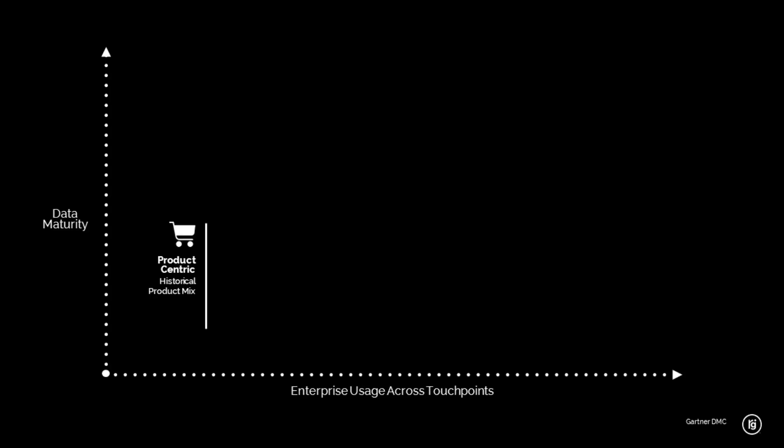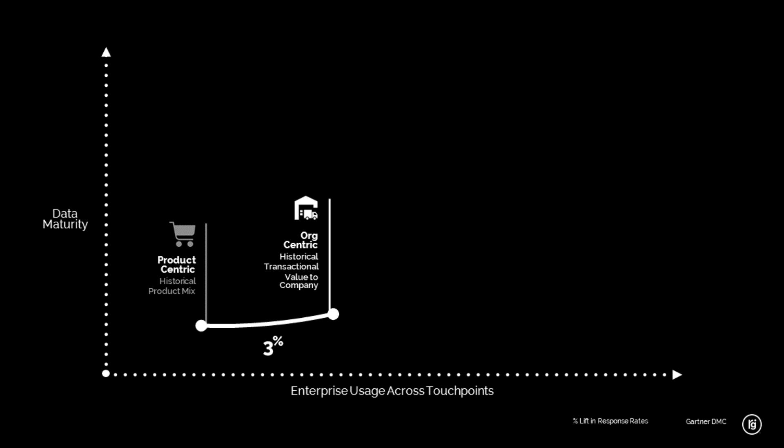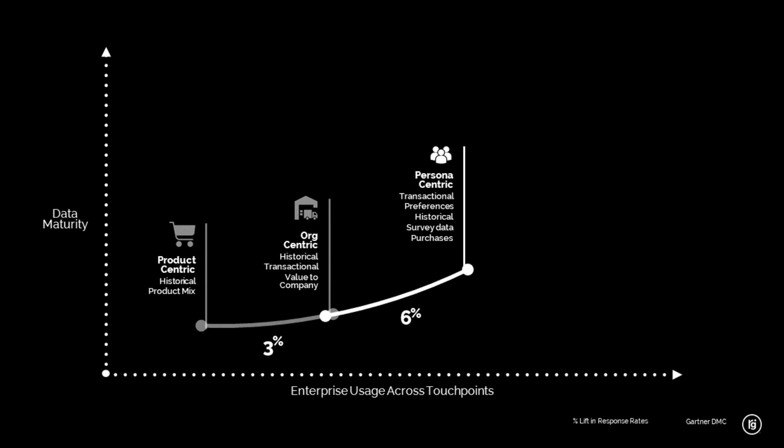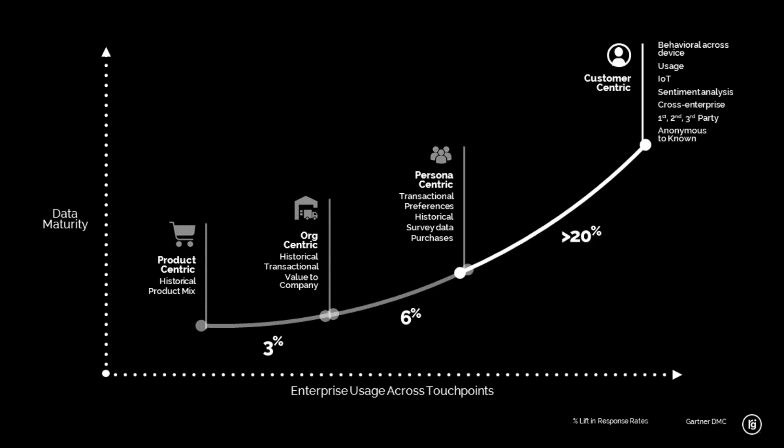The dividends are worth it. This is a chart from Gartner illustrating the outcomes you can achieve as data maturity and enterprise usage of data across touchpoints increases. Going from product-centric capabilities to organization-centric — looking at historical transactions or consumer value — you might see a 3% lift in response rates. Moving to persona-centric or segment-centric might yield a 6% lift. Ultimately, going to customer-centric — using behavioral data, usage, and sentiments across first-, second-, and third-party data, anonymous and known journeys — you can get upward of a 20% lift in response rates.